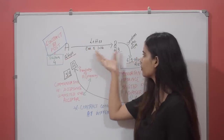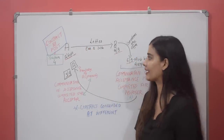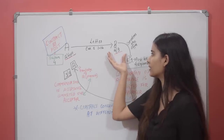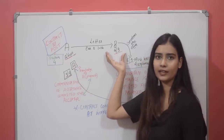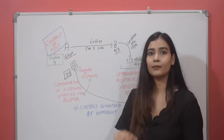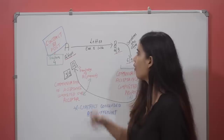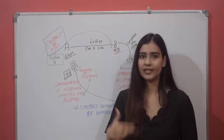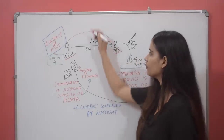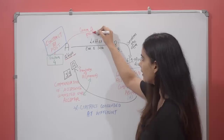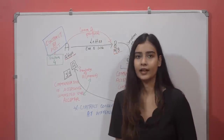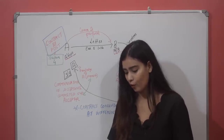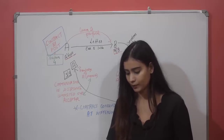Assuming A sends a letter to B on 1st September stating, 'Will you buy my car for rupees 1 lakh?' B receives the letter on 4th September. If you read the first line of Section 4, it says: the communication of a proposal is complete when it comes to the knowledge of the person to whom it is made.